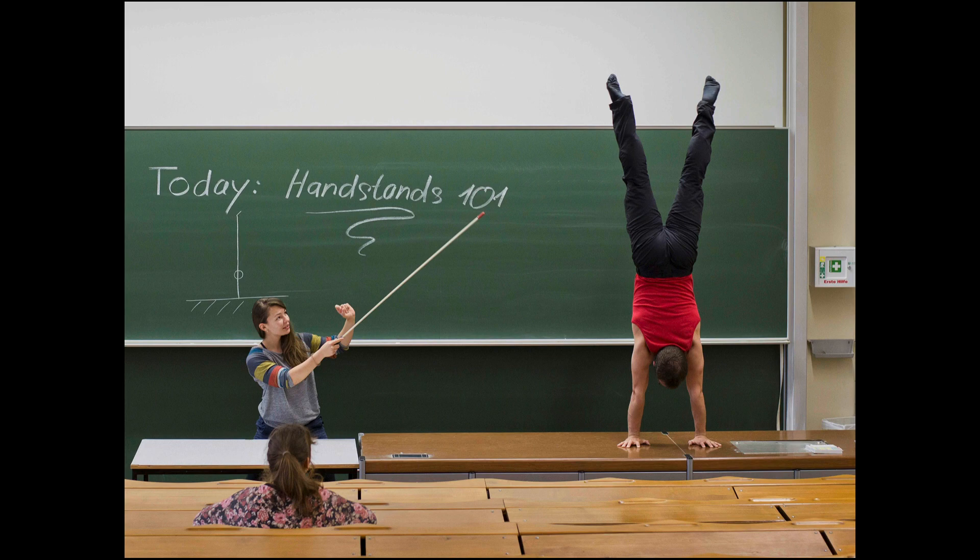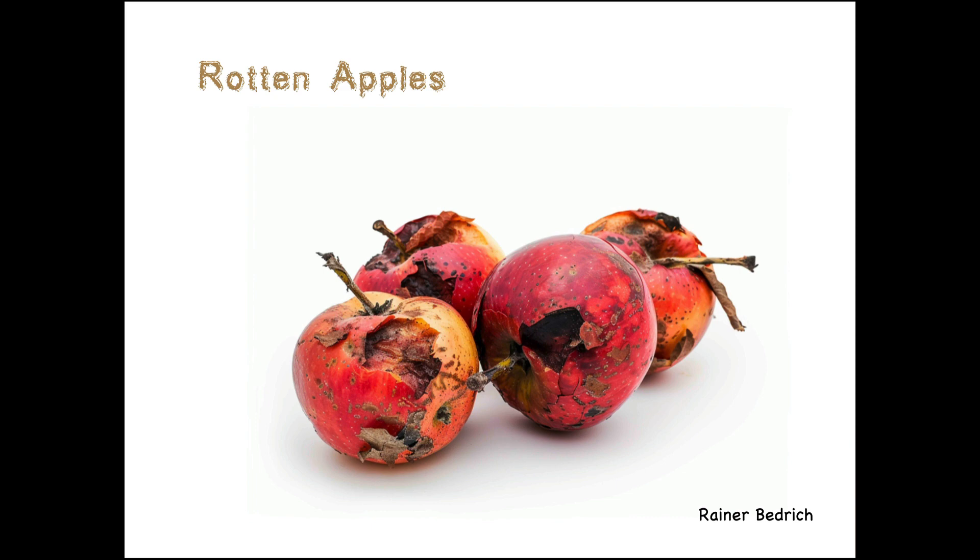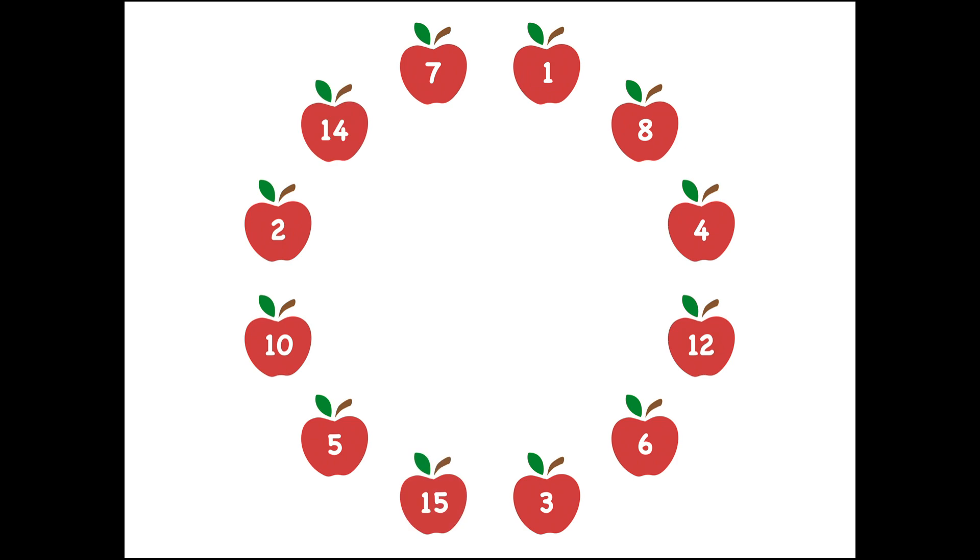Rainer Bedrick is a mathematician and acrobat from Germany. He sent in this beautiful puzzle, which we're going to call Rotten Apples. Here it is. Can you figure out the rules?